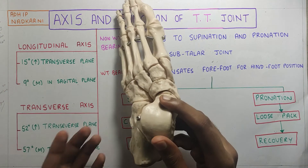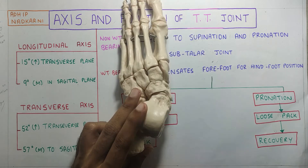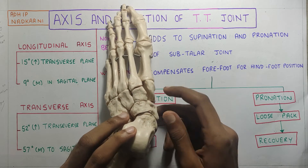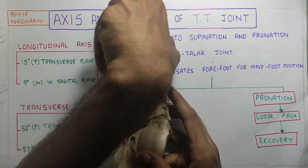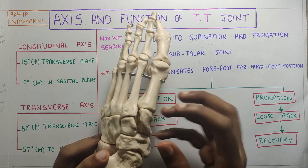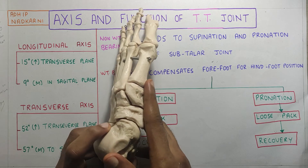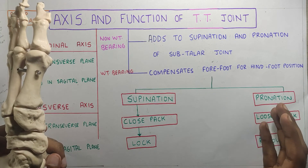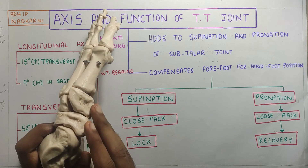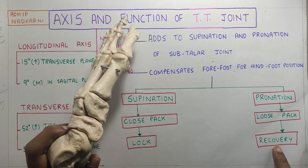In pronation, if there is a stone on the lateral side, some amount of pronation is tolerated. As pronation increases further, the transverse tarsal joint enters a loose pack position — the navicular and other bones have enough mobility to allow the forefoot to supinate and get the foot back into neutral. This is the key difference: in supination the transverse tarsal joint cannot help recovery, whereas in pronation the loose pack position enables forefoot compensation.